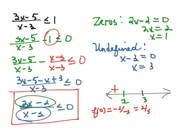Now I want a number in between 1 and 3. Let's say that I plug in 2. 2 times 2 is 4 minus 2 is 2. And 2 minus 3 is negative 1. So I get negative 2. So it's negative on that interval.